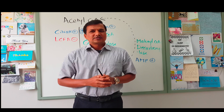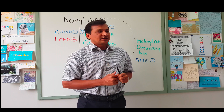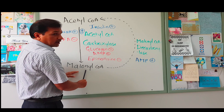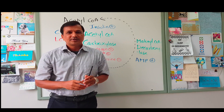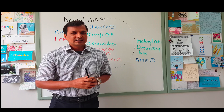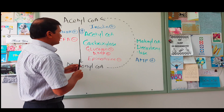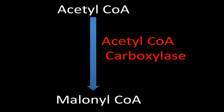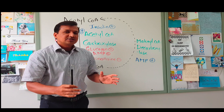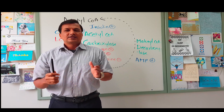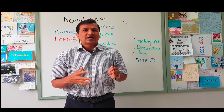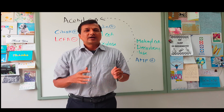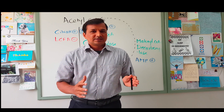Acetyl-CoA is converted into malonyl-CoA, and this is the most important step in fatty acid biosynthesis. This job is done by acetyl-CoA carboxylase. This enzyme is regulated by two mechanisms: allosteric modulators and hormonal control.